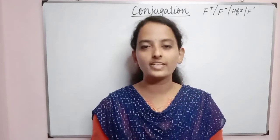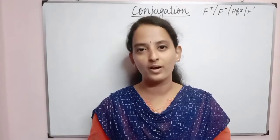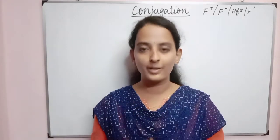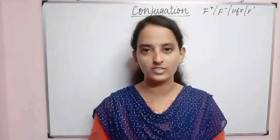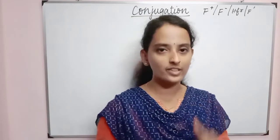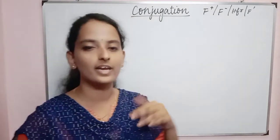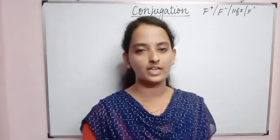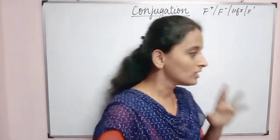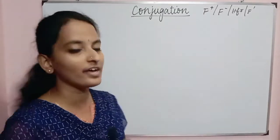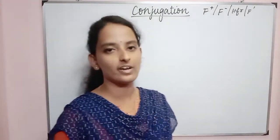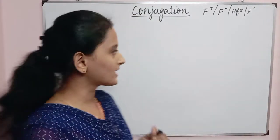Hi, hello, welcome back to DDS Biology. This is your biology tutor. In this video we will talk about bacterial reproduction. There are three types of reproduction: conjugation, transformation, and transduction. In this video we will talk about conjugation, and later we will talk about transformation and transduction. Conjugation is horizontal gene transfer.